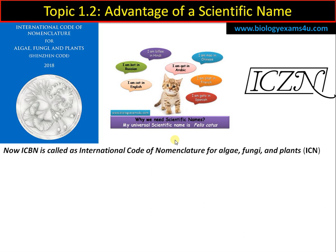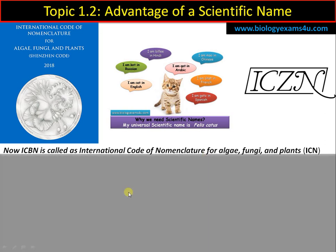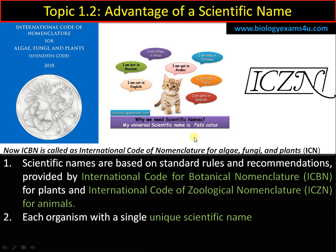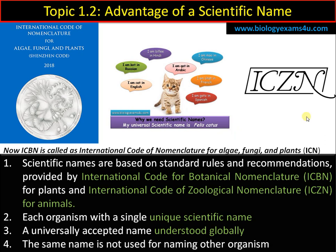The advantage of having a scientific name is that it is based on rules and regulations put forward by the ICBN — International Code for Botanical Nomenclature — now known as ICN, the International Code of Nomenclature for Algae, Fungi and Plants. For animals, it is governed by ICZN, the International Code of Zoological Nomenclature. These two autonomous bodies regulate the rules for naming plants and animals. As per the rules, each organism is given a unique scientific name known globally and not assigned to any other organism. These regulations are called a 'code'.